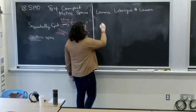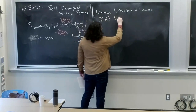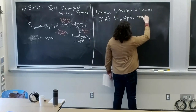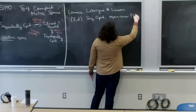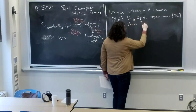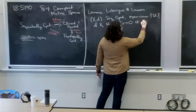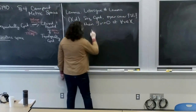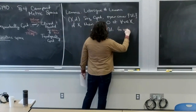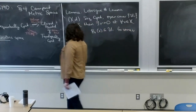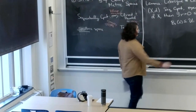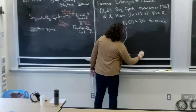Given a metric space x that is sequentially compact, if I have an open cover of x — call them the U_i's — then there exists an r greater than 0 such that for all x in X, the ball of radius r around x is contained in one of the U_i's for some i. Let's draw a picture of what I'm describing here, because this quantifier logic can be a little confusing. Here's a little blob for a metric space X with an open cover by the U_i's.